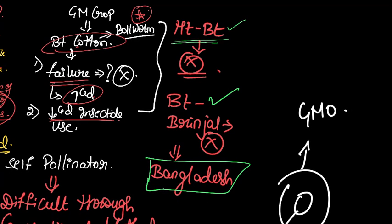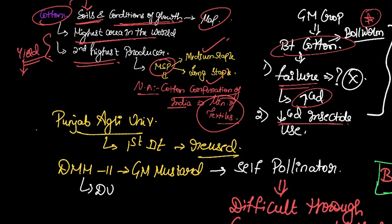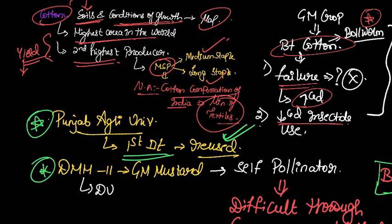Similarly, you have the Bt brinjal which is not allowed in our country but is seeing tremendous results in our neighboring country Bangladesh, who went ahead and cultivated this crop despite a lot of controversy. The next thing that you have to note here is another trivial fact: Punjab Agricultural University is the first university that came up with the production of a Bt cotton variety which can be reused.